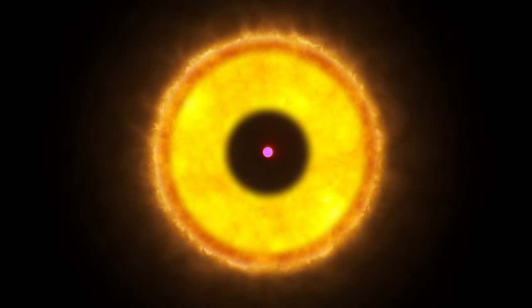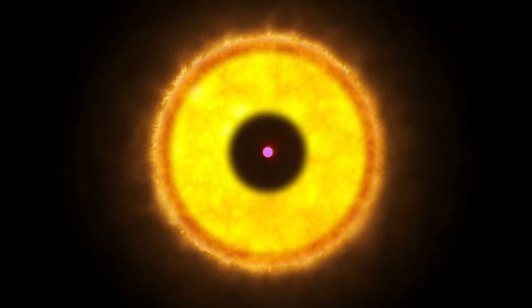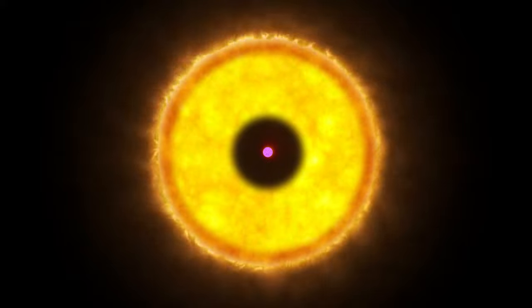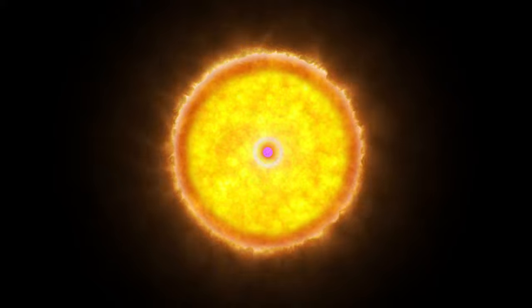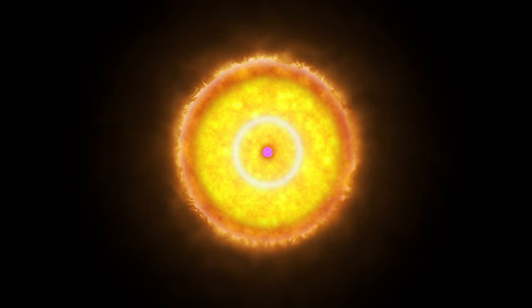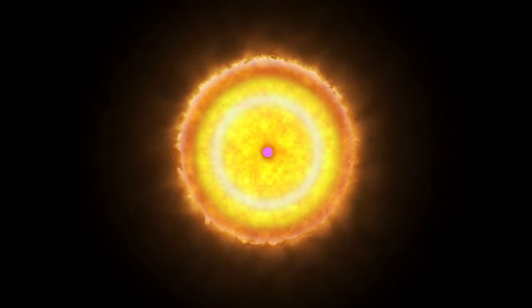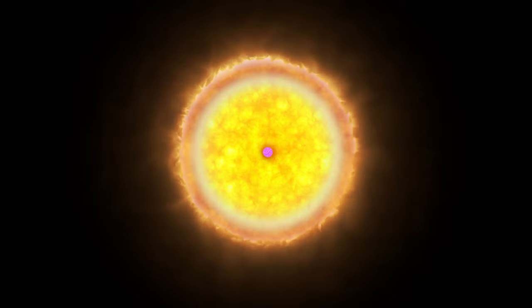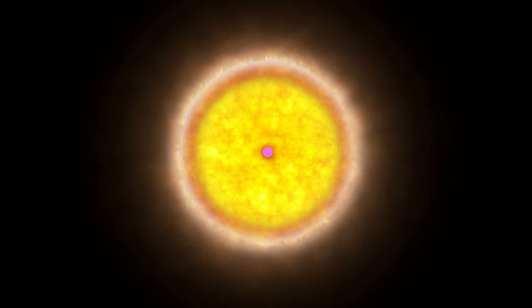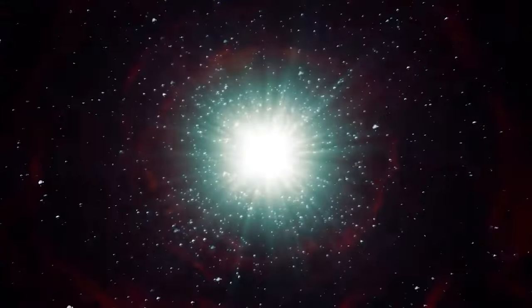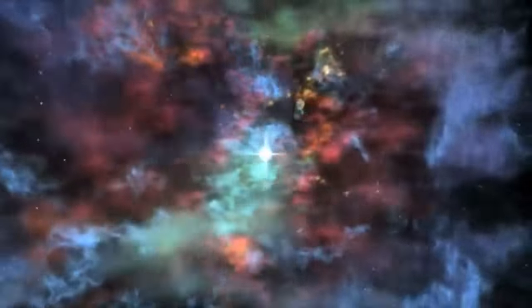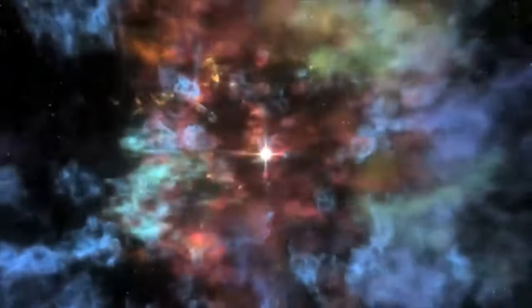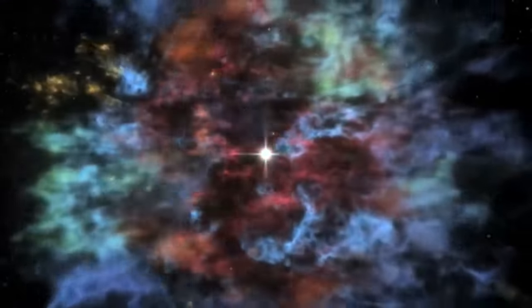As the core contracts, the surrounding layers of the star rush in to fill the void. This inward fall accelerates these layers to incredible speeds, causing them to collide with the neutronized core and bounce back. This collision creates a powerful shockwave that races outward, ultimately tearing the star apart in a cosmic spectacle known as a supernova explosion. This explosion scatters the star's material into space, giving birth to what we call a planetary nebula. At the heart of this nebula, the intact stellar core remains, now transformed into a neutron star.